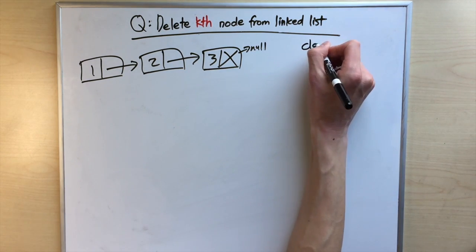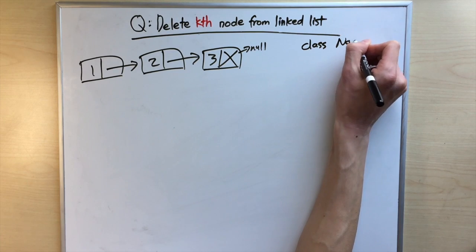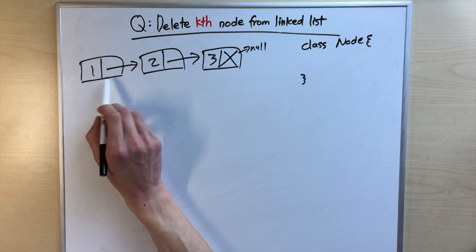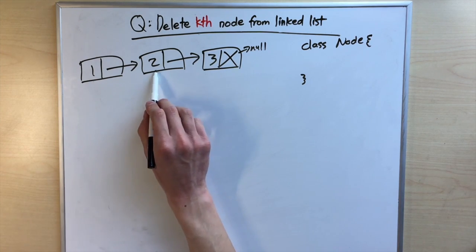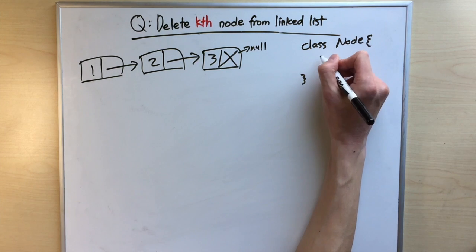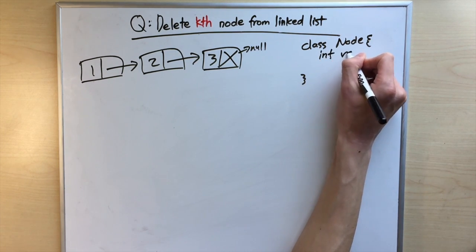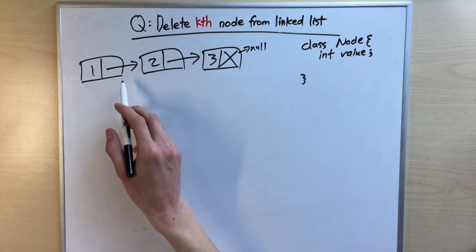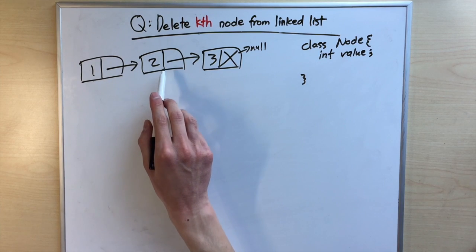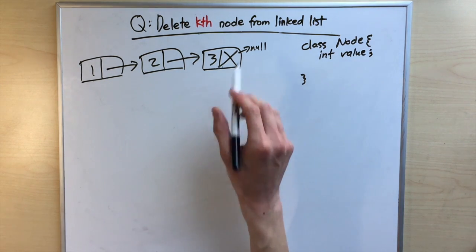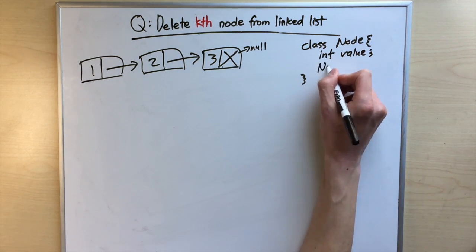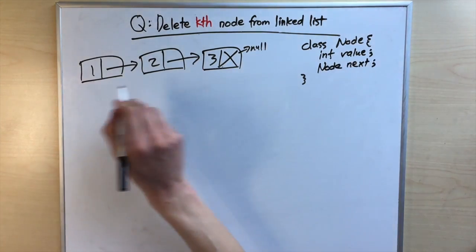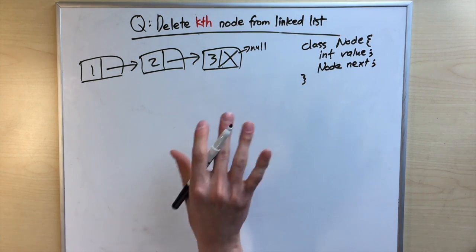We can describe each node with a node class. Each node has a value — for example, one, two, or three — so we call that int value. Each node also points to another node, and we call that pointer 'next' because it always points to the next node in our linked list.